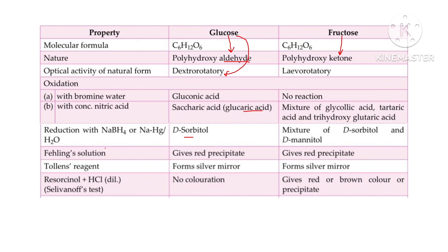In Fehling's test and Tollens' test, both glucose and fructose give a red precipitate (Cu2O) and a silver mirror respectively, since both are reducing sugars. In Seliwanoff's test, which is specific for ketoses, only fructose and sucrose give a positive result. Fructose is positive because it contains the ketonic functional group; sucrose is positive because upon hydrolysis it yields fructose.